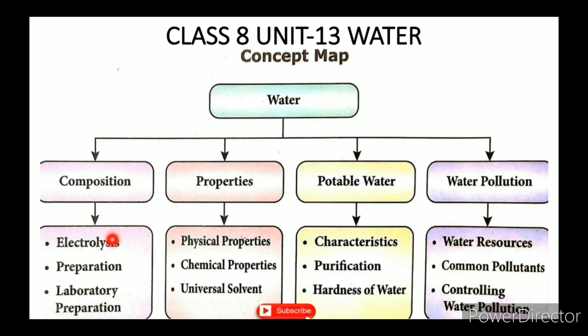Hydrogen is produced at the cathode and oxygen at the anode. For Preparation: scientist Henry Cavendish first prepared water. The laboratory preparation involves distilled water, which is then cooled.